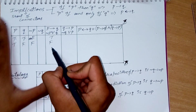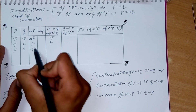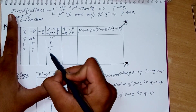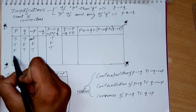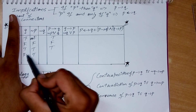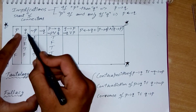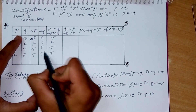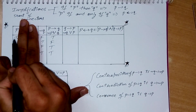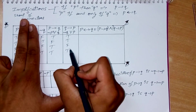Continuing the truth table: if negation of P is false and Q is true, the answer is true. If negation of P is true and Q is true, both are attempted so the answer is true. If negation of P is false and Q is false, the answer comes out to be true — one question has been attempted.